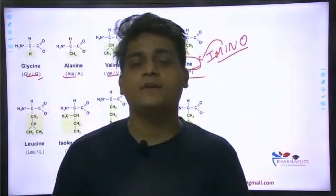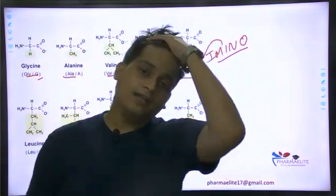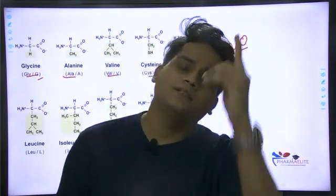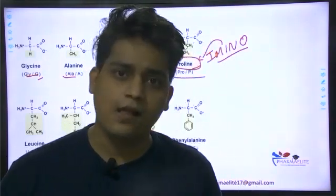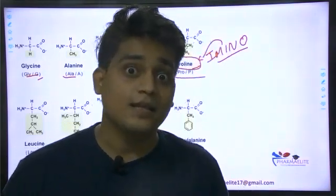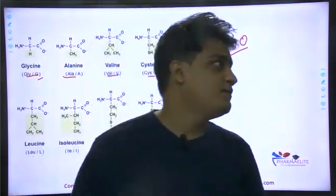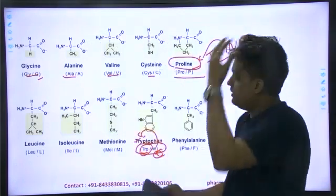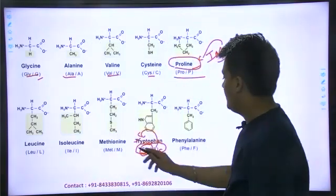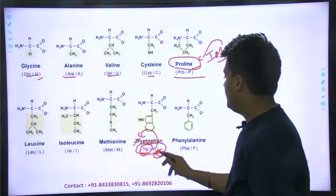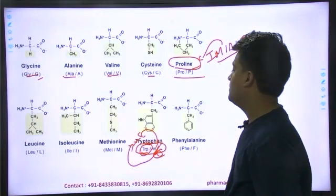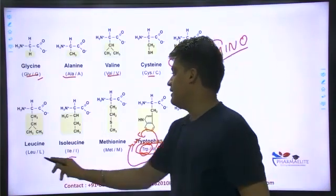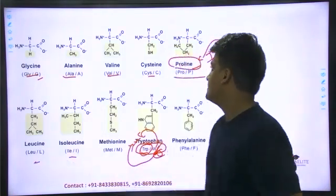To make W for tryptophan easy: if you remember your periodic table, tungsten has the symbol W. Same way, W for tryptophan. I hope you are able to correlate. The rest of the one-letter codes are very easy — nothing particularly difficult.